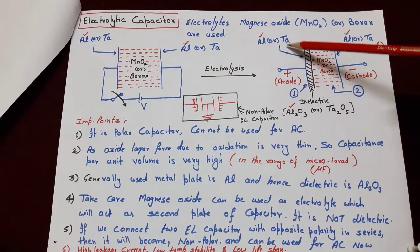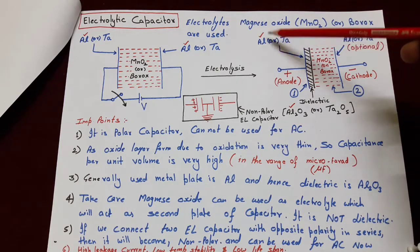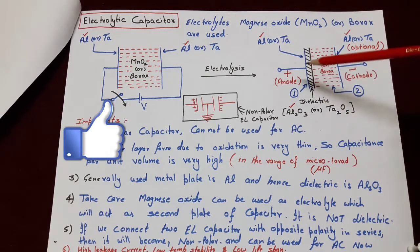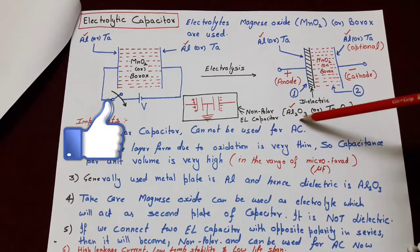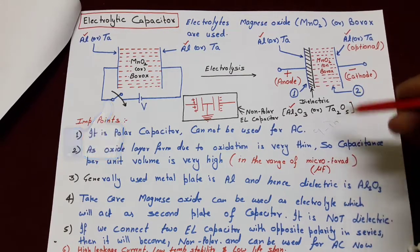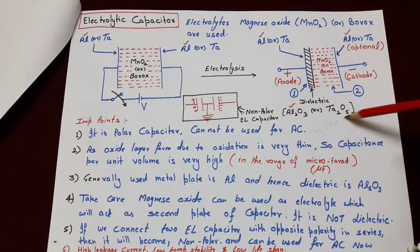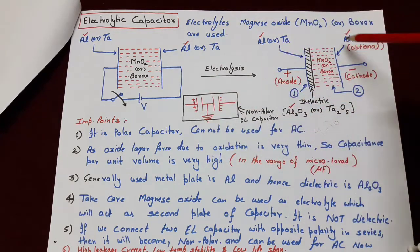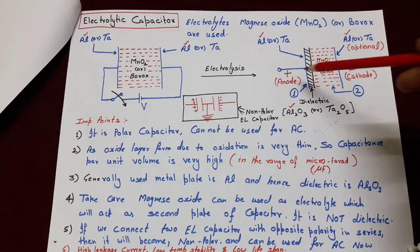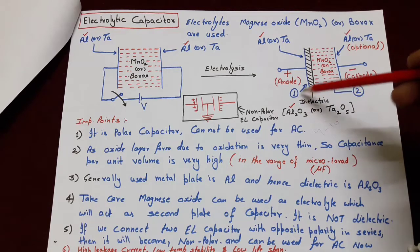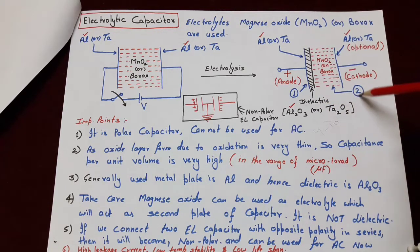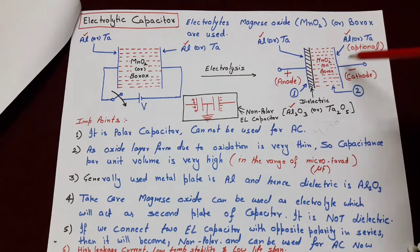Ab ye oxide kis metal ka banega wo depend karega ki aapne ye metallic foil kis metal ki use ki hai. Generally ye metallic foil aluminium ya phir tantalum ki hoti hai, lekin mostly aluminium foil use hoti hai. To agar aluminium foil use ki hai to electrolysis ki wajah se jo oxide layer develop hui hai wo hogi aluminium oxide Al₂O₃, which is a dielectric aur iska dielectric constant nearly 9 to 10 hota hai. Agar yahan par tantalum foil use karte hain to jo oxide develop hota wo hota Ta₂O₅. Yeh oxide layer develop hone ke baad voltage source ko remove kar dete hain aur hamara electrolytic capacitor taiyar ho gaya hai. Is mein aluminium foil act karti hai as the first plate of the capacitor, oxide layer act karegi as a dielectric, aur jo electrolyte use kiya tha wo act karega as the second plate of the capacitor.